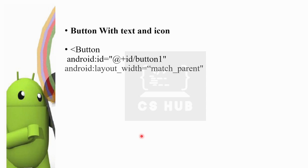Add an android:id attribute. Then add the icon and the text. The icon goes into the image button, and you click on the button to trigger the action.